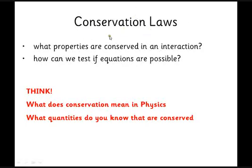Now we've categorized all these particles, what we need to do is to see the point of all this. The main point is to apply conservation laws. We need to know what properties are conserved in an interaction. The conservation laws in particle physics are very important for us to know what is possible and what's not possible.